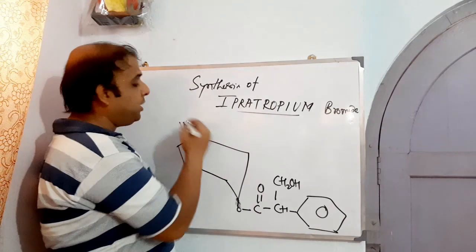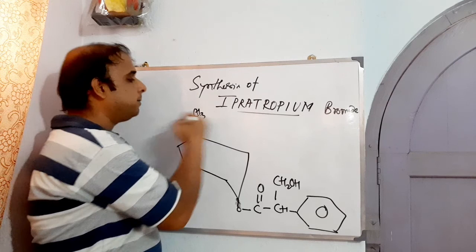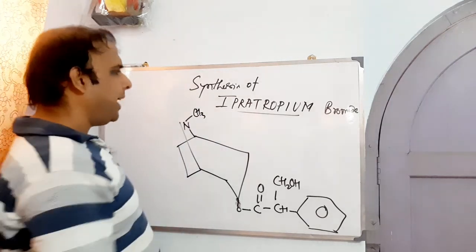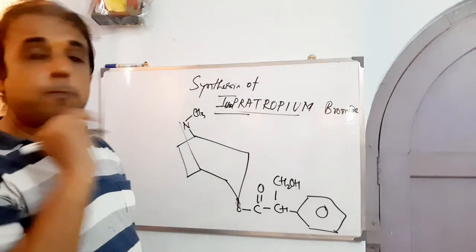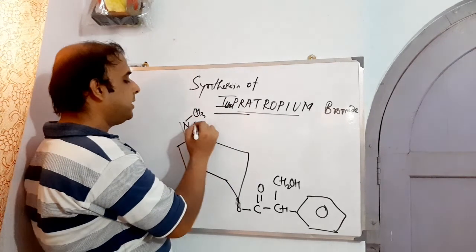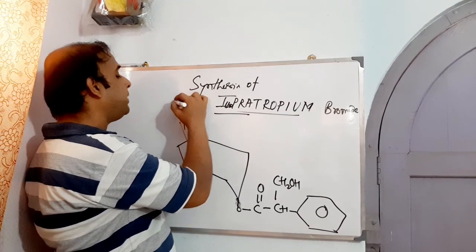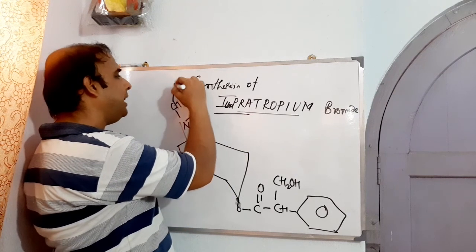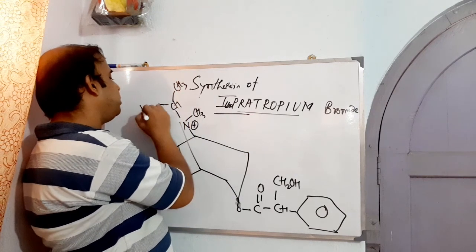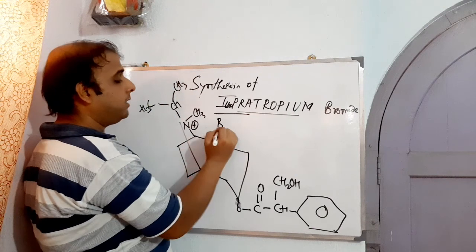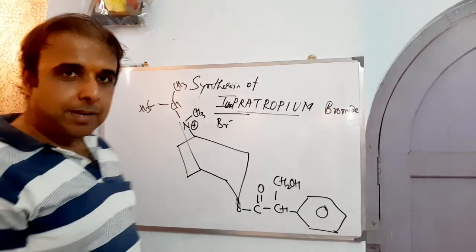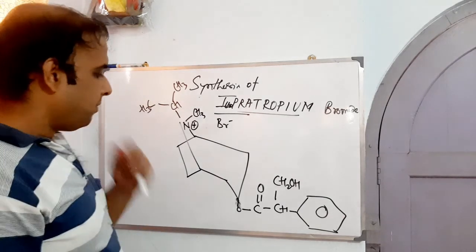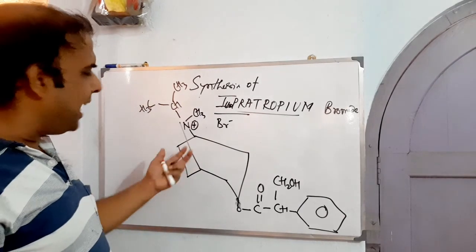The additional thing that is there in tropine is a methyl. So Ipratropium bromide - IPRA means isopropyl. So the additional thing is we have an isopropyl or we can say sometimes propan-2-yl. So propan-2-yl bromide. This is how it looks, Ipratropium bromide. Now this is a bicyclic system.